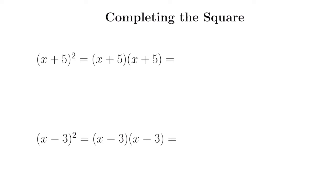Notice here that we have x plus 5 quantity squared. And if we multiply this out, we get x squared plus — we have a 5x and another 5x, that gives us 10x, and then plus 25. This expression over here is called a perfect square trinomial. It's a trinomial because it has three terms, and it's a perfect square because it's the square of the binomial x plus 5.